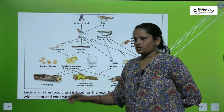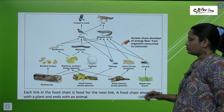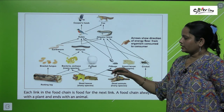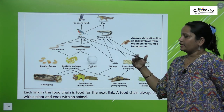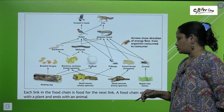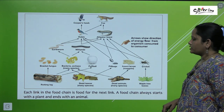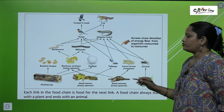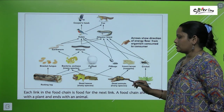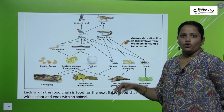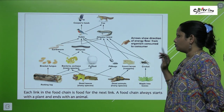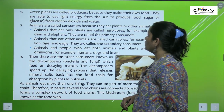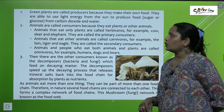Each link in the food chain is food for the next link. A food chain always starts with a plant and ends with an animal.